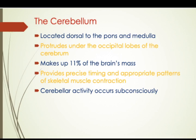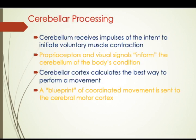The cerebellar activity is totally subconscious. During cerebellar processing, it receives impulses to initiate voluntary muscle contraction, and the cerebellar cortex calculates the best way to perform a movement. A blueprint of this movement is sent to the cerebral motor cortex, which makes the person walk, run, jump, and so on. Cerebellar processing is very important — it occurs subconsciously and is solely responsible for addressing all motor activity by a person.